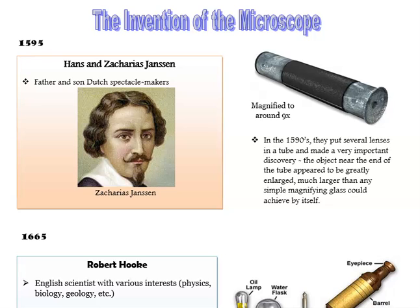The Invention of the Microscope. In 1595, a father and son Dutch pair named Hans and Zacharias Janssen were eyeglass makers. They put several lenses in a tube and made a very important discovery: the object near the end of the tube appeared to be greatly enlarged, much larger than any simple magnifying glass could achieve by itself. Their little tube ended up magnifying the object to around nine times the original size.